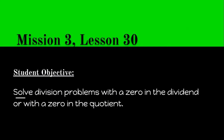Welcome to Mission 3, Lesson 30. Our student objective for this lesson in math is to solve division problems with a zero in the dividend or with a zero in the quotient. So we're doing division problems, but now we're going to see what happens when we have zeros at certain spots throughout that problem and how we handle that. We know how to do division. We can handle this. Let's get to it.